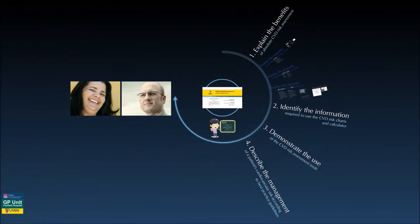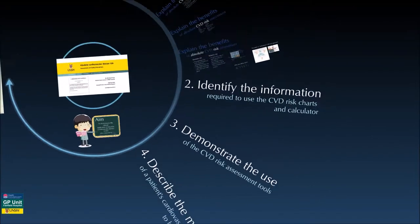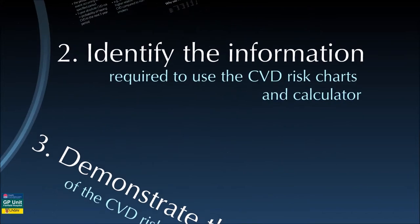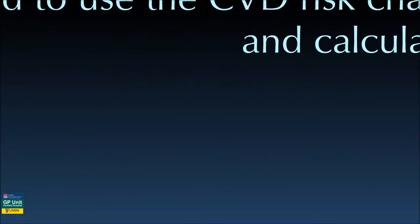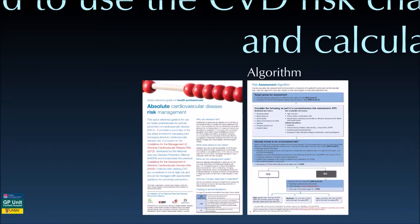The second learning outcome for the learning activity is to be able to identify the clinical information required to conduct the risk assessment. We will be going through the algorithm in the Quick Reference Guide for Health Professionals Absolute Cardiovascular Disease Risk Management from the National Vascular Disease Prevention Alliance. This document can be downloaded from the Heart Foundation website and is one of the key references of this learning activity.